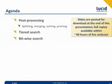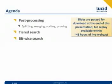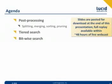Today is the Lucene index post-processing — and by post-processing I mean the splitting, merging, sorting, and pruning. Then I'm going to explain the concept of tiered search, where you have multiple tiers, each with different quality of returned results. And finally I will explain a slightly unorthodox application of Lucene and Solr, which is Bitwise Search.